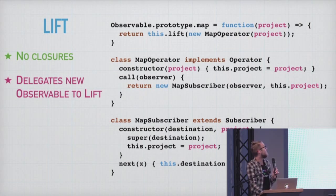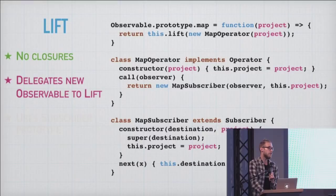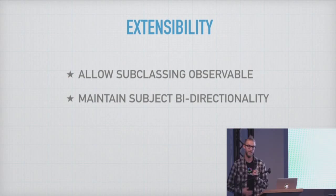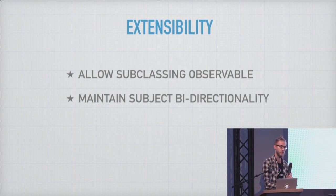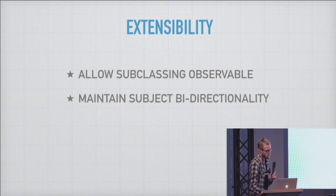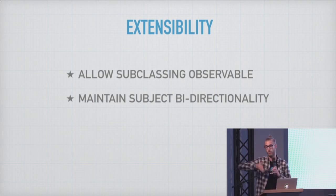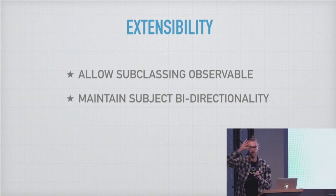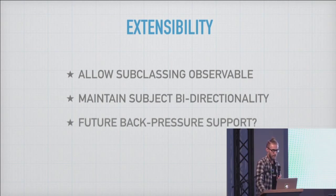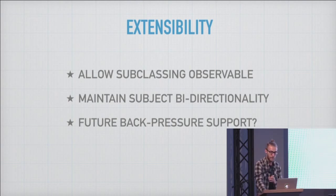Lift gives us the benefit that it delegates new observable creation to the function. So if you're going to subclass observable, all you have to do is override lift. This is cool because before, calling flatMap gave you back a plain observable and you lost all your custom methods. This also allows you to use something like WebSockets where you have subjects that are two-way communication — you can maintain the bi-directionality of communication, and potentially in the future add backpressure support the way RxJava did.